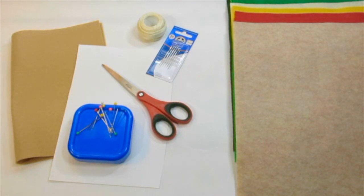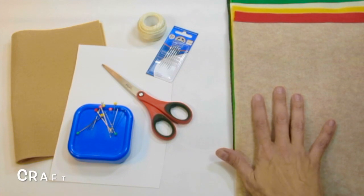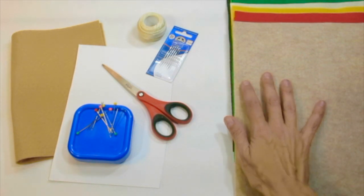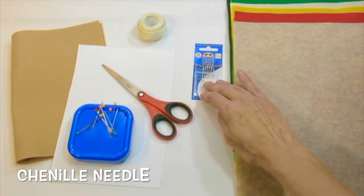To make your stuffed pizza, the first thing you're going to need to do is gather up your supplies. For this masterpiece, we are going to be using the following. We will be using felt. You'll need a lot of different colors to choose from for all the toppings of your pizza. You're going to be using a needle for your sewing.